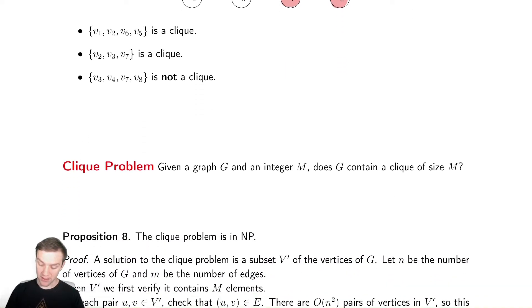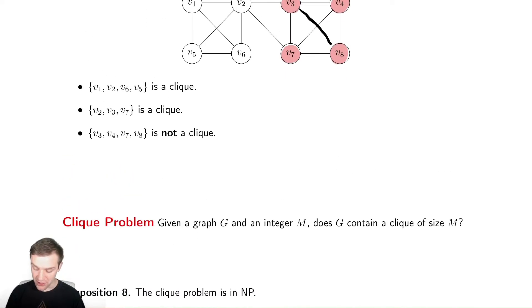So let's write out the problem formally. Given a graph G and an integer M, does G contain a clique of size M? Exactly the same as the independent set, just we're looking for a clique instead of an independent set.